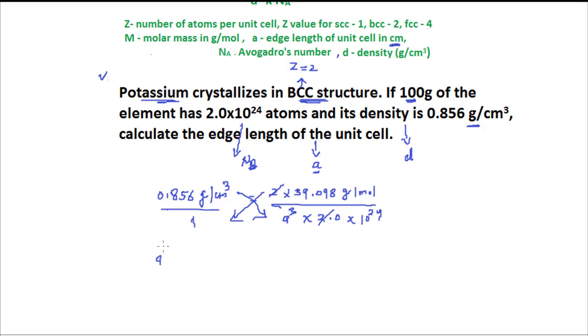Here we get A cube multiplied by 10 to power, it can be written 1.0 multiplied by 10 to power 24 and multiplied by 0.856. And on right side, the value which we have 39.098.